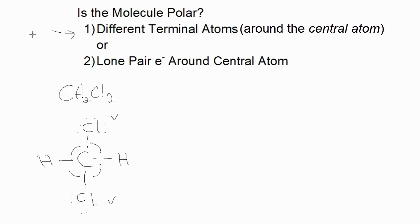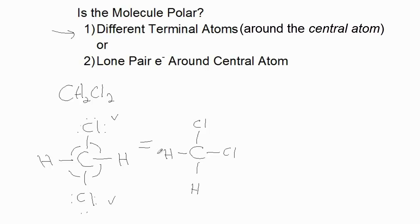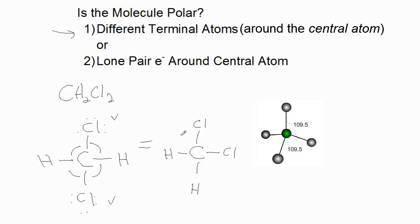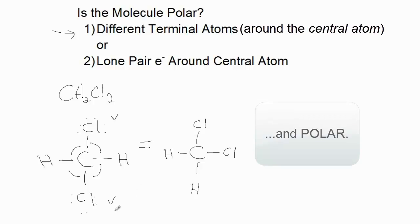One might also ask: couldn't this Lewis structure be drawn with the two chlorines next to one another? Well, it turns out these two Lewis structures are identical. You have to appreciate that there is a tetrahedral electron arrangement around that carbon. If one were to make the molecular model of this molecule, you would find that these two representations are identical.